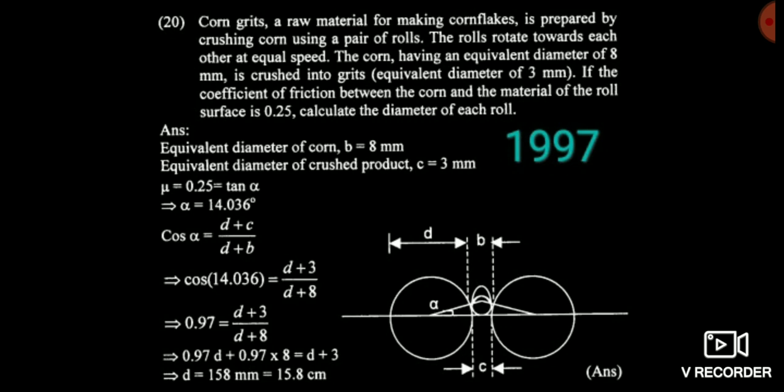Here d plus c is the base and d plus b is the hypotenuse. If you forget the formula in the examination, no problem — you can easily derive it. If you draw the diagram of both rolls, mark the clearance area and draw the feed diagram, then using basic trigonometry cos theta equals base by hypotenuse, you can calculate the diameter of roll, which is 15.8 cm.